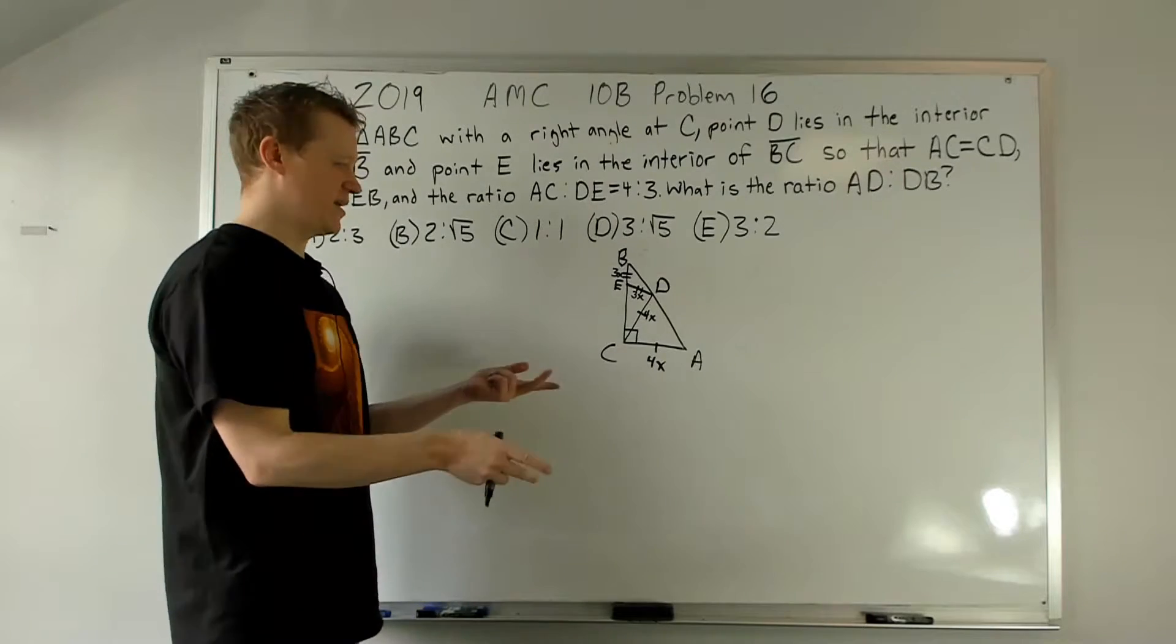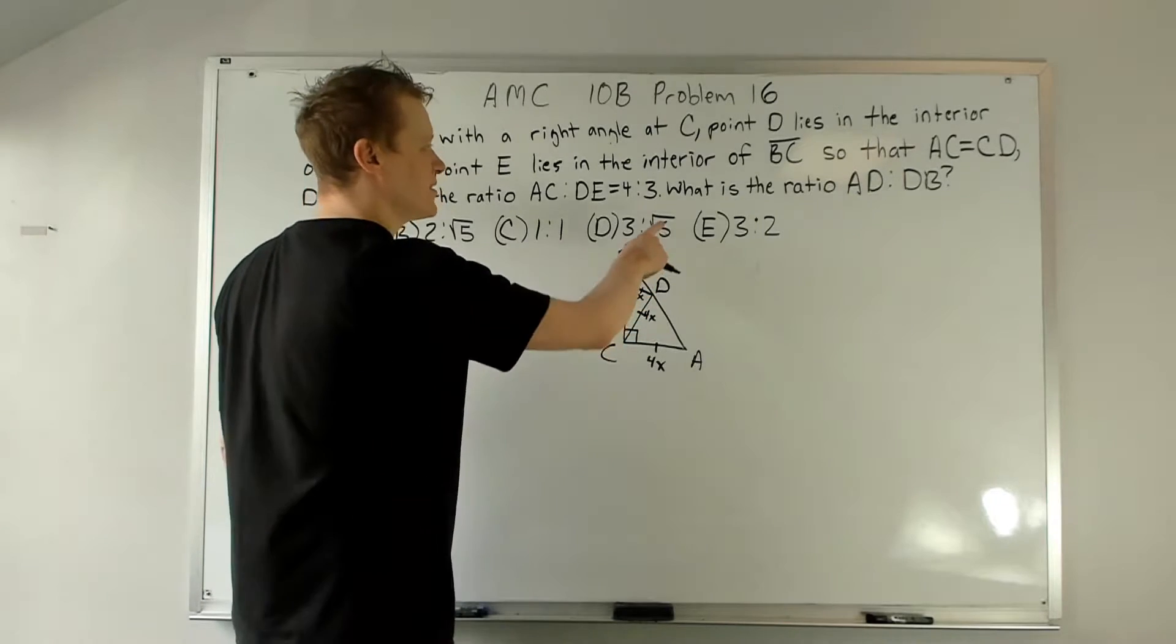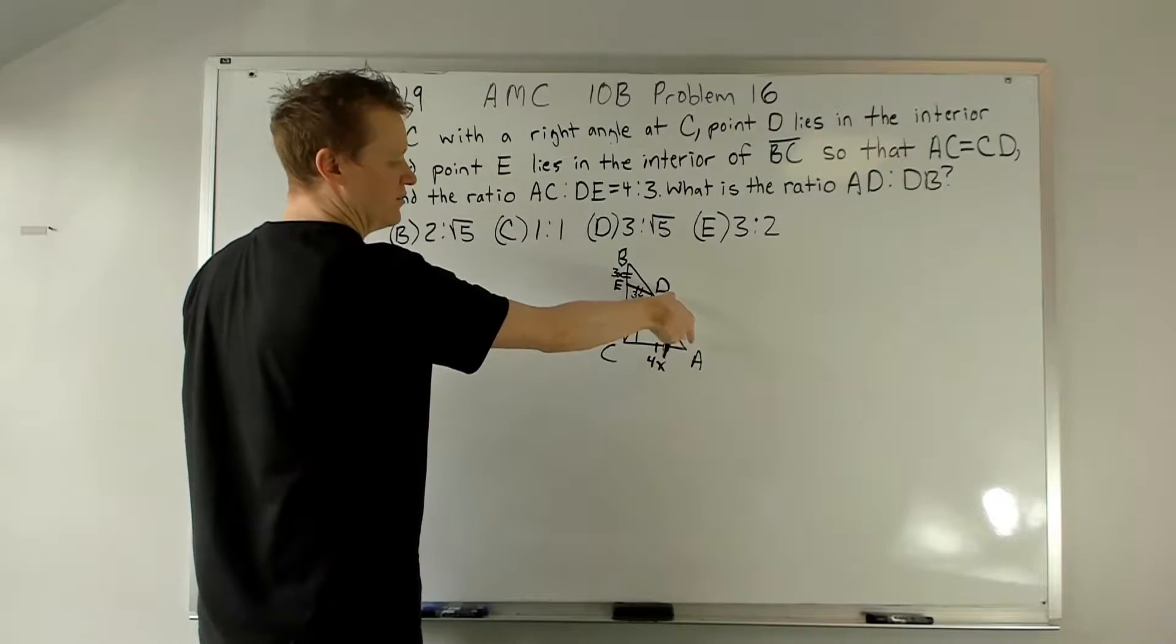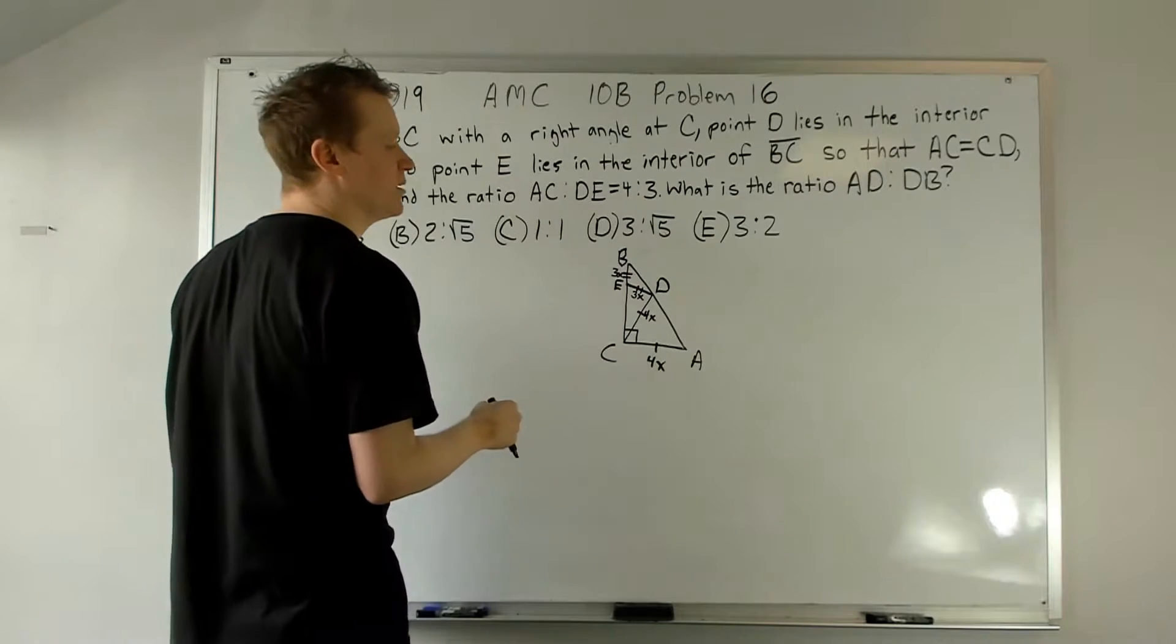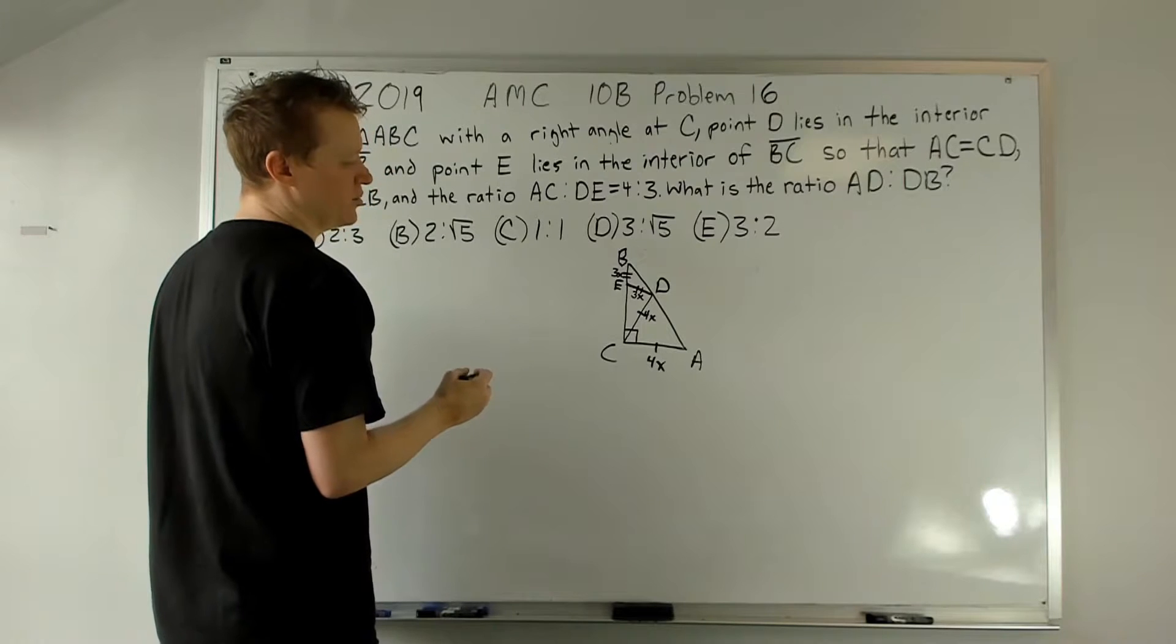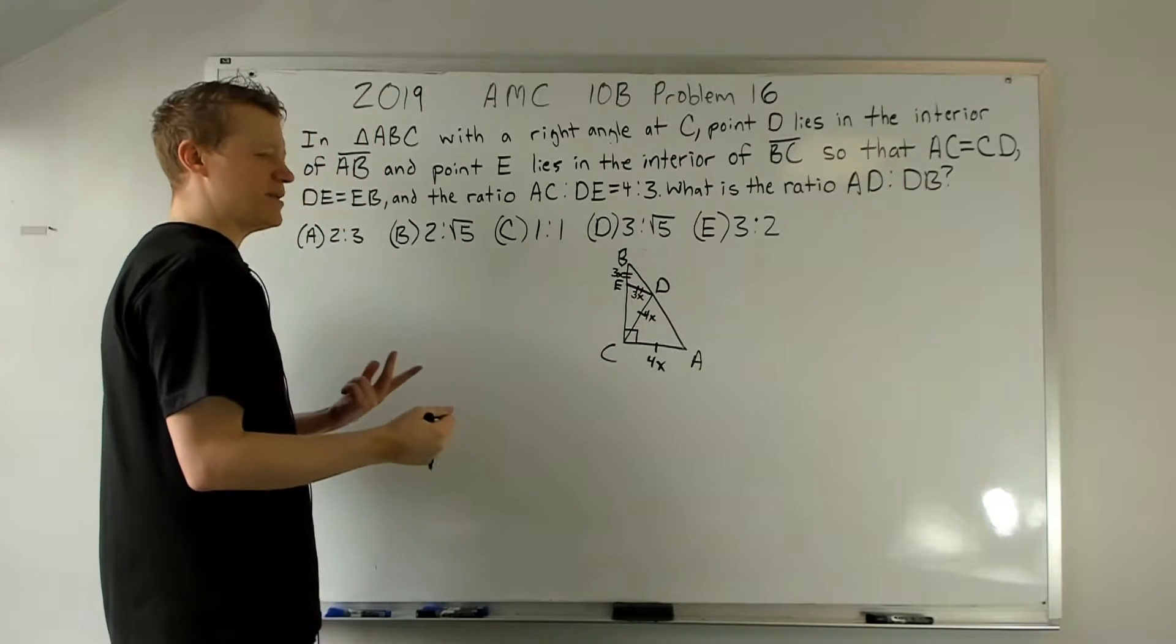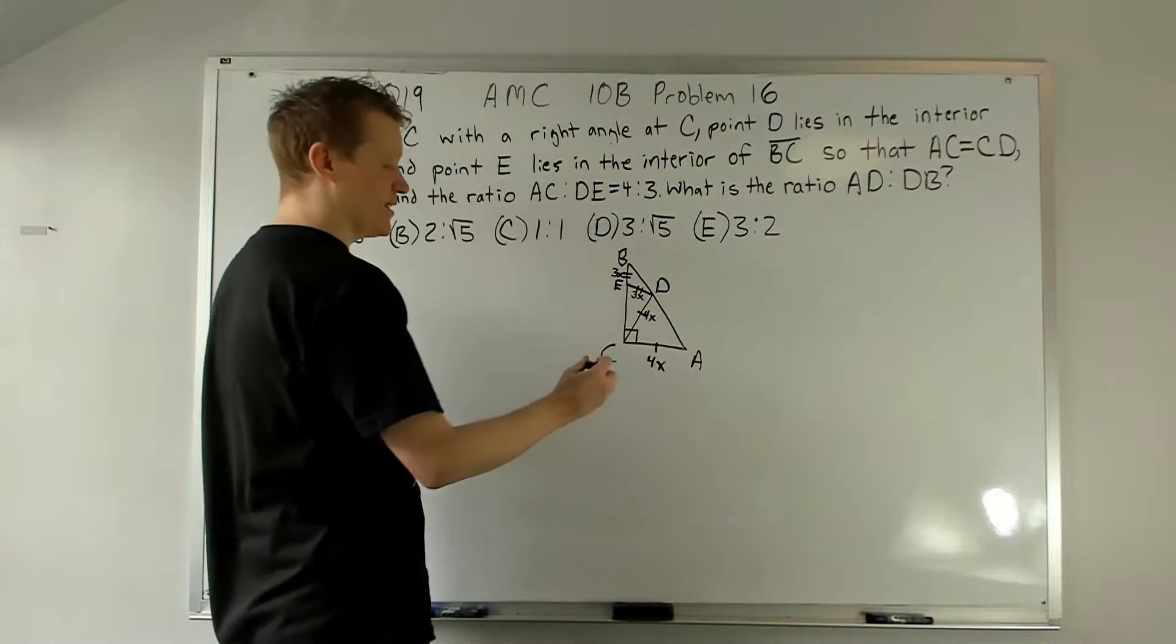With all these 4s and 3s running around and right triangles, maybe there's a 5 involved somewhere. Let's see - what is the ratio of AD to DB, the two lengths of the hypotenuse of the original triangle. So what can we do? Well, we might not know how to begin, but we do know we have isosceles triangles. Let's just take some baby steps.